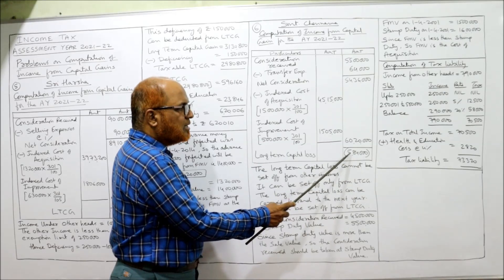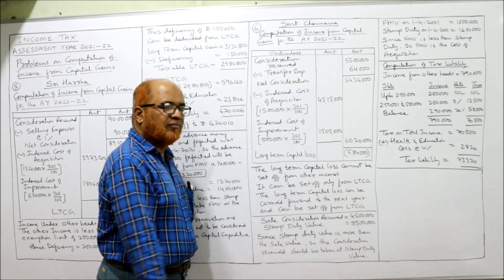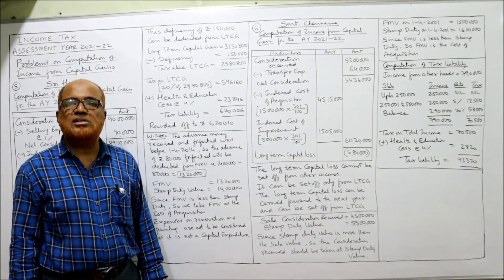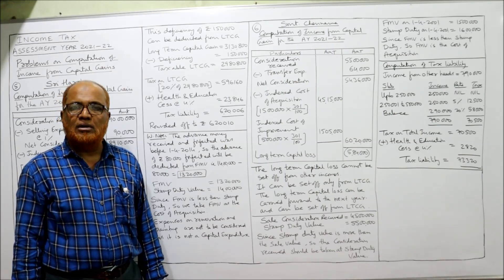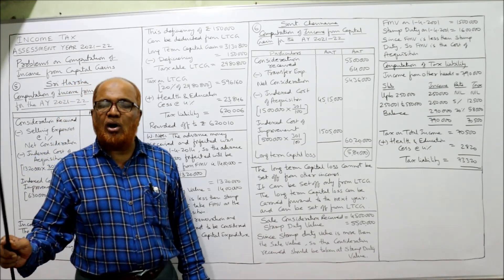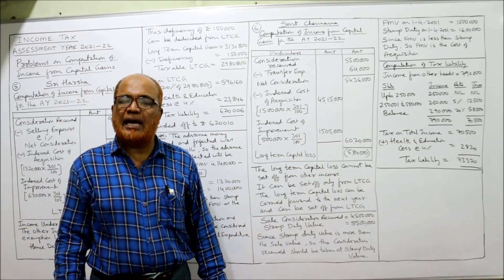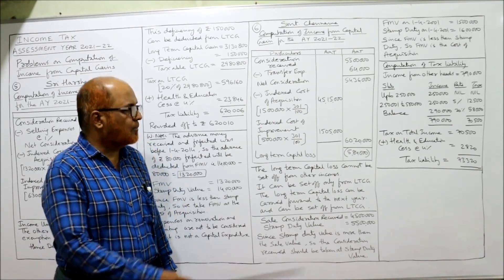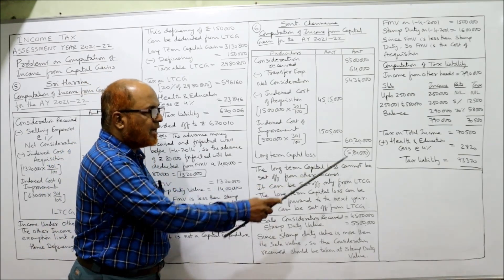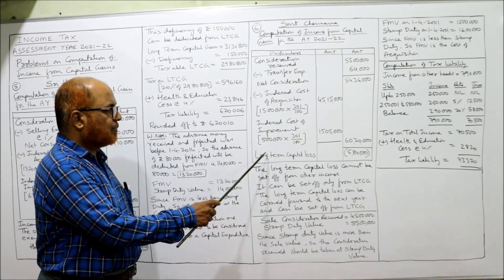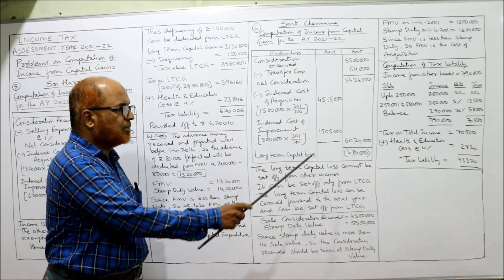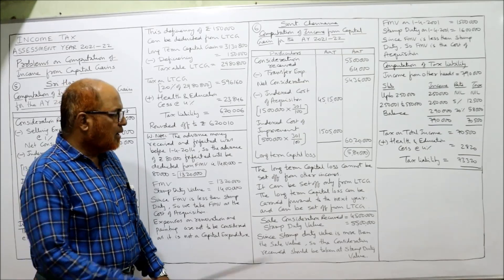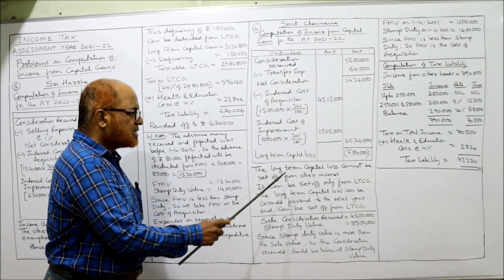Net consideration is Rs. 54,36,000 minus total indexed cost of Rs. 60,20,000, giving a negative result of minus Rs. 5,84,000. So there is no long-term capital gain — there is a long-term capital loss of Rs. 5,84,000.